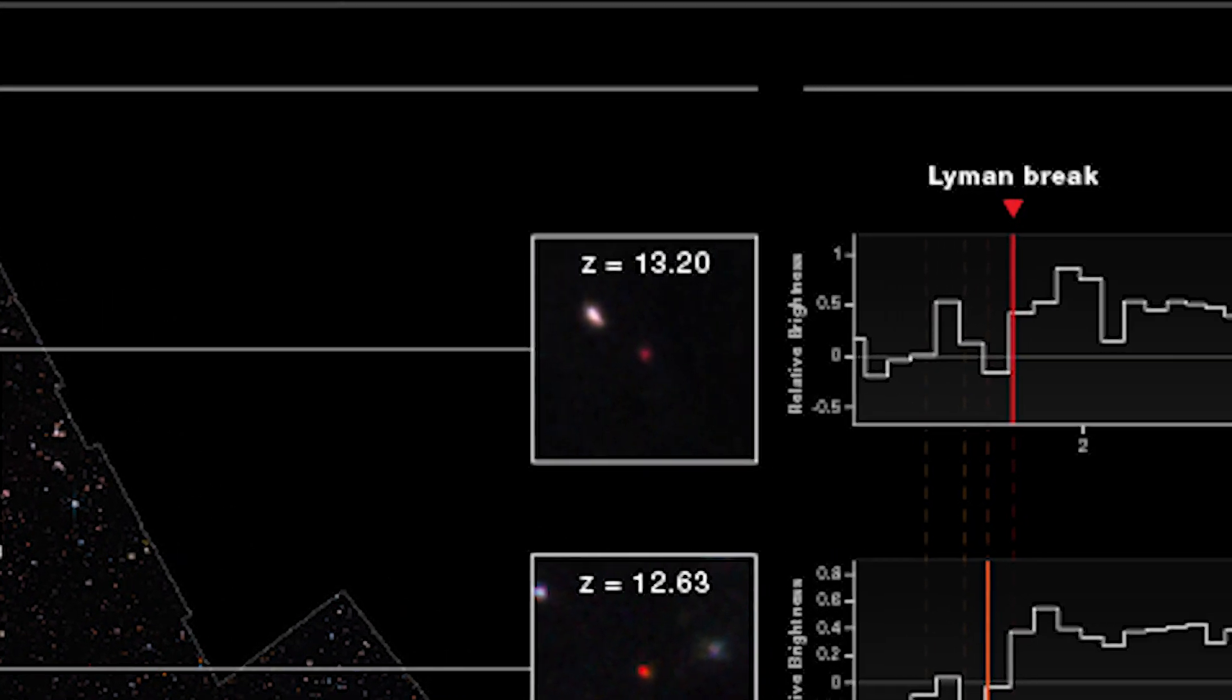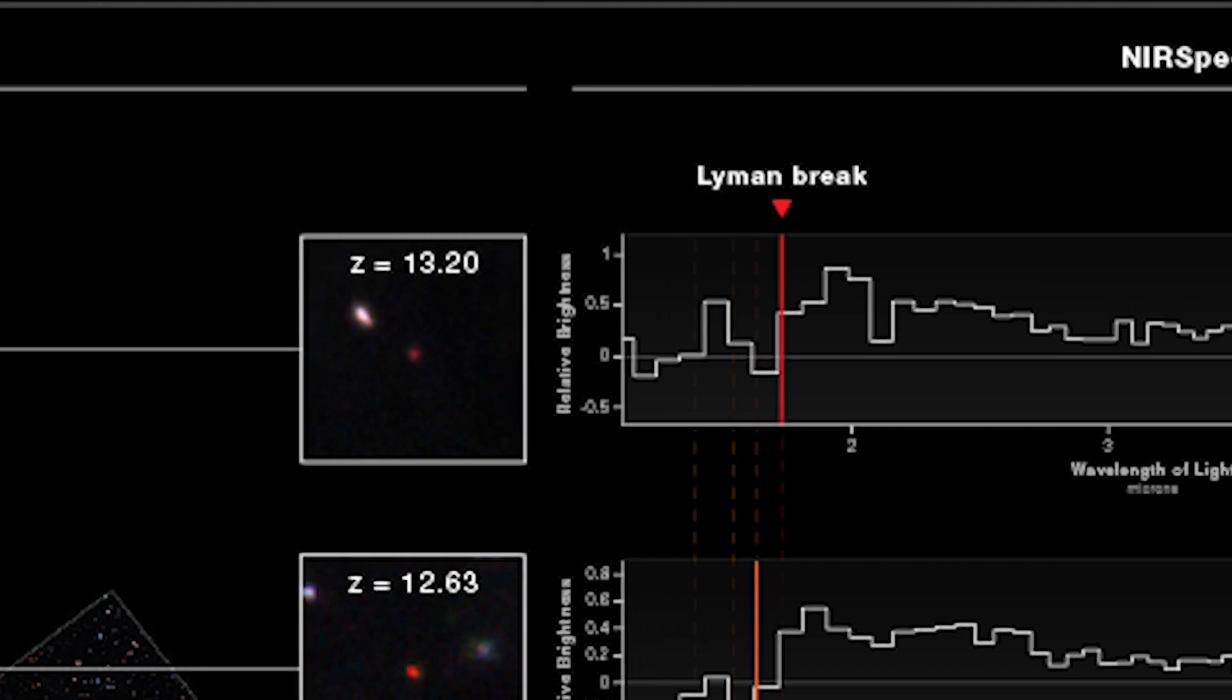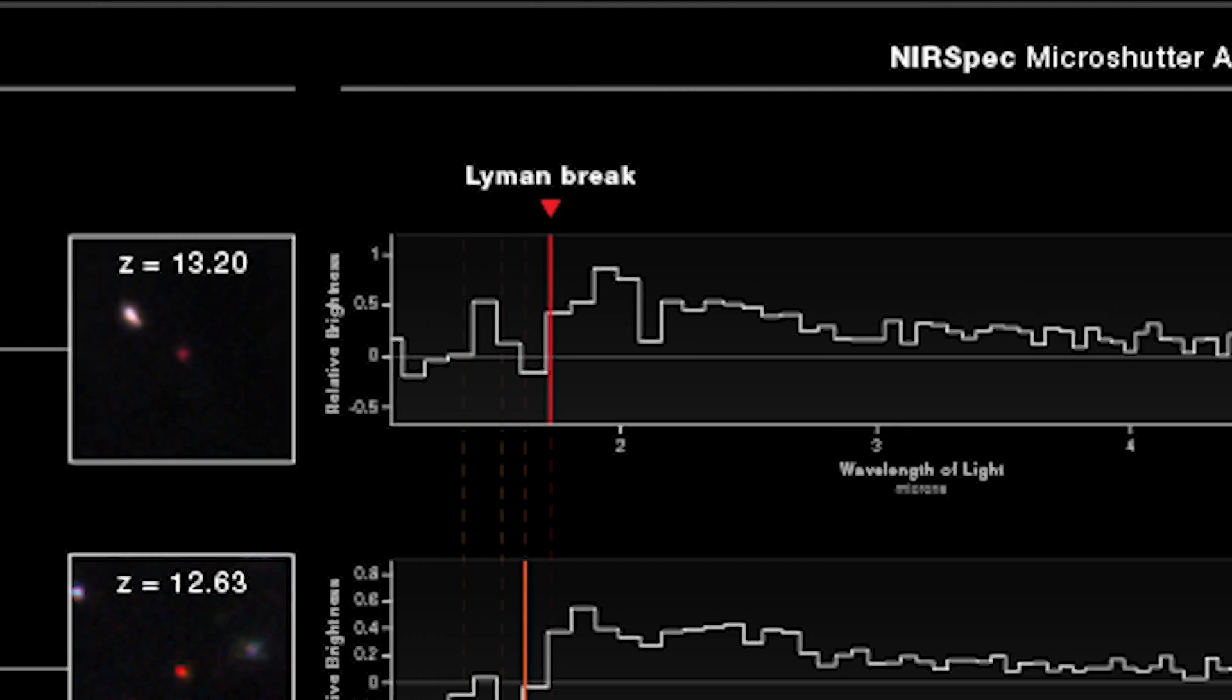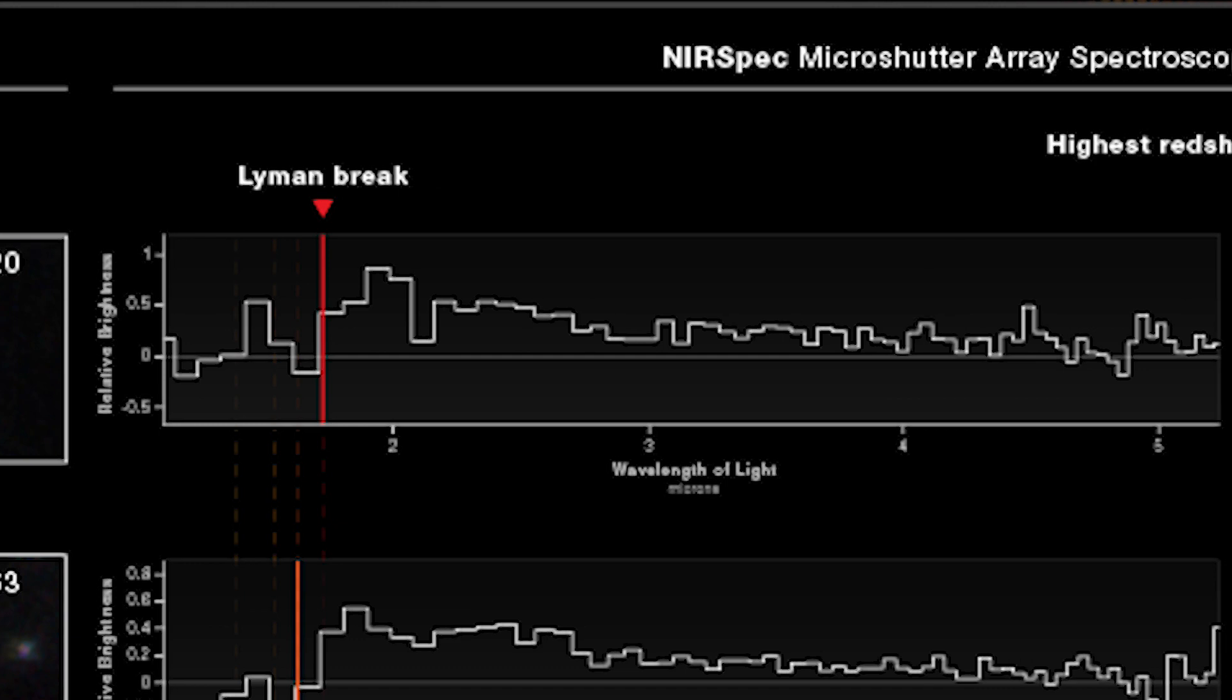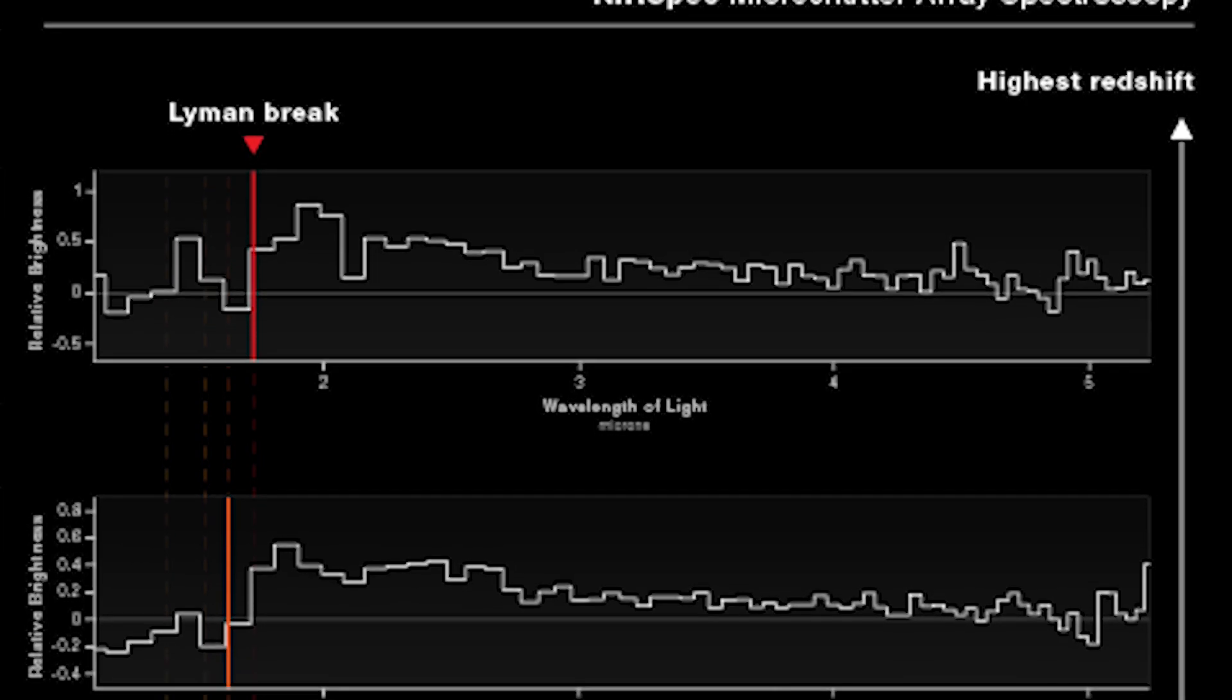Using a small set of specialized filters on their camera, scientists can get reasonably accurate estimates of their target's brightness and color. Photometry is the term for this method.